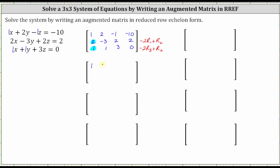Row one remains the same. Replacing row two with negative two times row one plus row two: negative two times one plus two is zero; negative two times two plus negative three is negative four plus negative three, which is negative seven; negative two times negative one plus two is two plus two or four; negative two times negative ten plus two is twenty plus two or twenty-two. Replacing row three with negative two times row three plus row two: negative two times one plus two is zero; negative two times one plus negative three is negative five; negative two times three plus two is negative four; negative two times zero plus two is two.